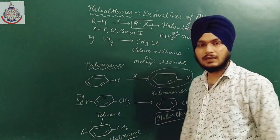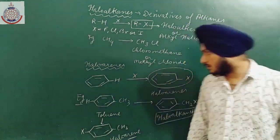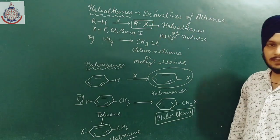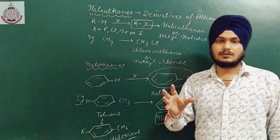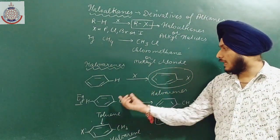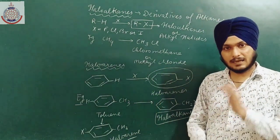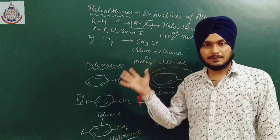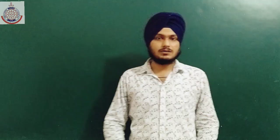However, if I replace a hydrogen directly on the benzene ring with a halogen group, then this is a Haloarene, because the halogen group is directly attached to the benzene ring. So Haloarenes are compounds in which the halogen is directly attached to an aromatic system.